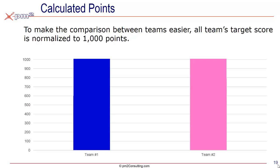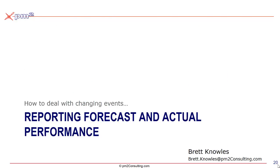Both teams have 1,000 points to play with during the period of that quarter. Over that period, things will happen that will adjust the points they could really achieve and what points they're actually able to achieve. But at least this way, to begin with, I can compare both teams — or as many teams as we want — against each other. Next, we'll talk about how we actually report the forecast and actual performance.